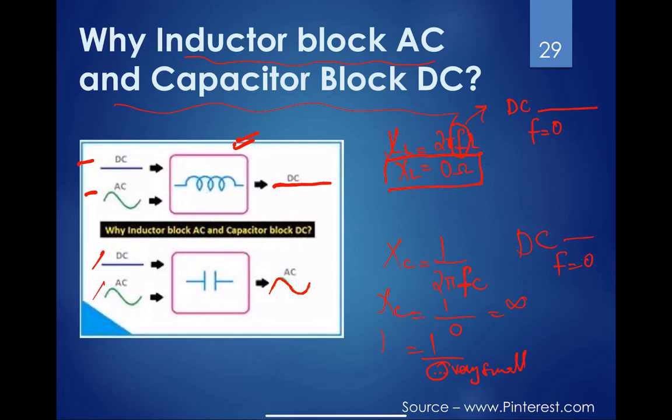Therefore the capacitive reactance is going to be extremely small. These electrical signals take the route of least resistance, and therefore AC signal will go past capacitor and DC will be blocked.